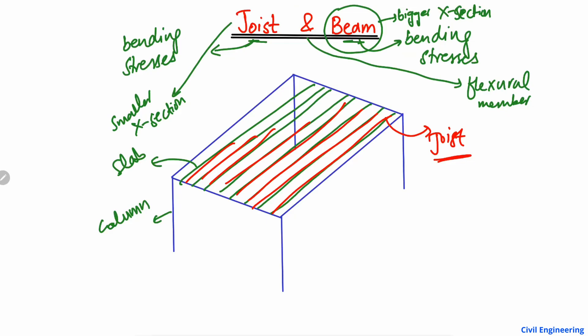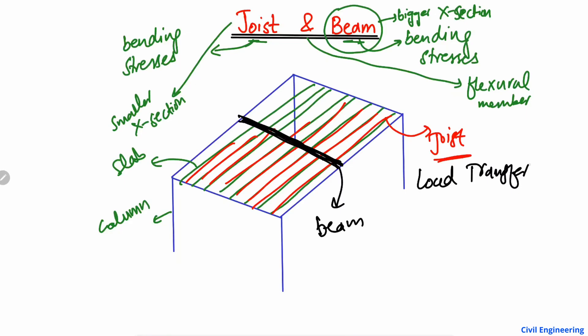The beam is a big member provided in the middle of the slab to transfer all the load from the small joists into the big beam. This beam is provided in the middle and transfers the load from the joists, taking the load from the slab joists and passing it into the outer beams.